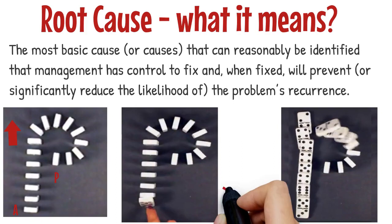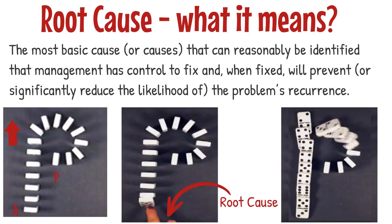So what is the root cause for process P to fail? Yes, you are correct. Flicking caused by human finger is the root cause of the failure.